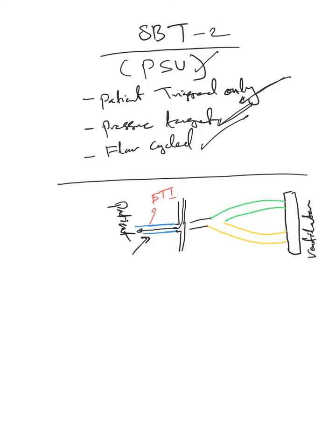Pressure target, that means the ventilator is still connected to the ET tube and the only thing the ventilator will provide is the pressure support. We decide how much pressure support. Usually the higher the pressure support the easier to breathe for the patient because that will push the air through the tube and the less work of breathing.